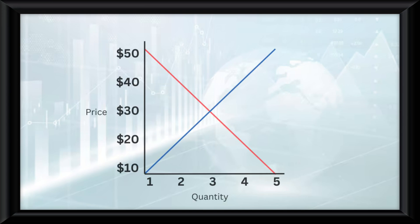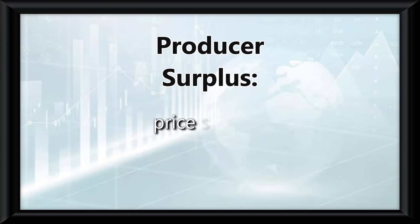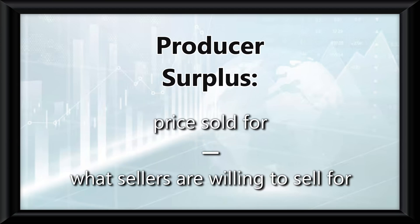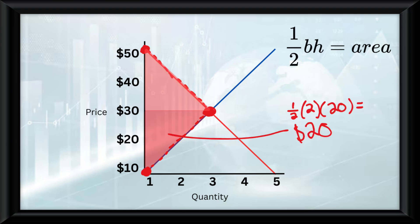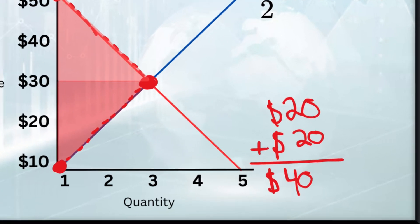The same concept applies to the supply curve. If the consumer wants to sell the product for $10 but is actually sold for $30, which is the market equilibrium, that difference of $20 is the producer surplus, which is calculated by the price sold for minus what the sellers are actually willing to sell it for. Anything above the equilibrium point on the supply curve would not be a producer surplus because nothing would have been bought. We calculate the producer surplus using the same area formula for the triangle, and the area of the producer triangle plus the area of the consumer triangle gets us our total surplus.